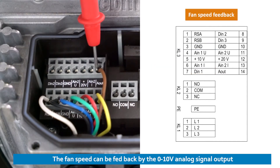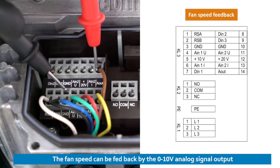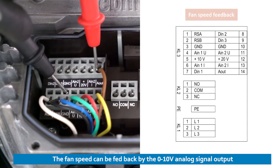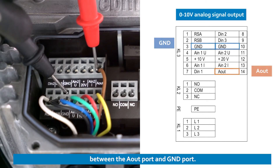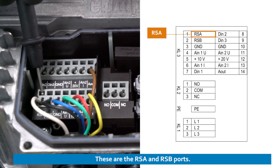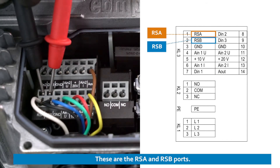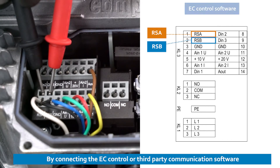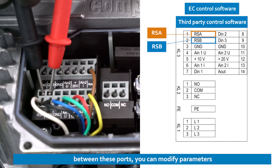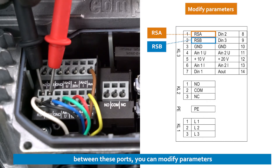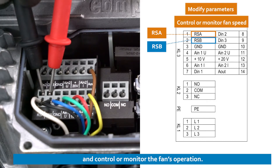The fan's speed can be fed back by the 0-10V analog signal output between the AR port and GND port. These are the RSA and RSB ports. By connecting the EC control or third-party communication software between these ports, you can modify parameters and control or monitor the fan's operation.